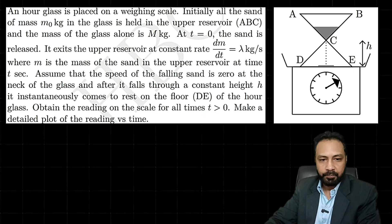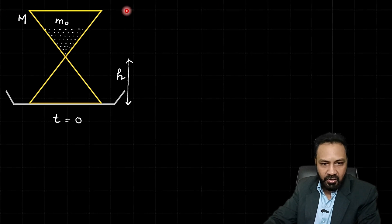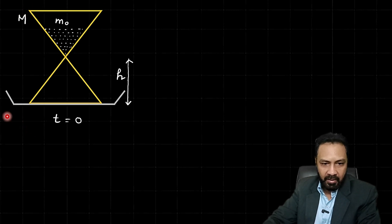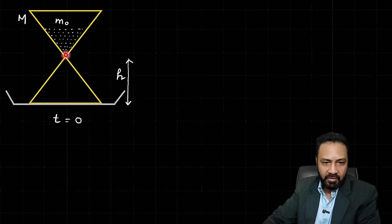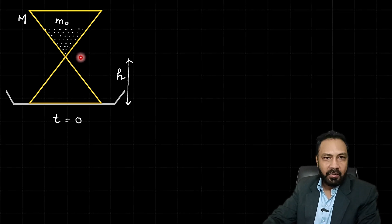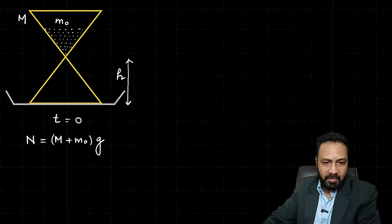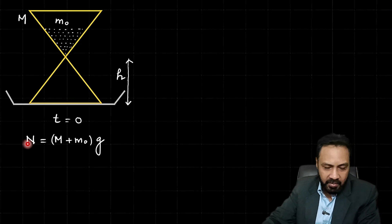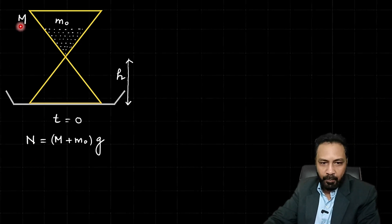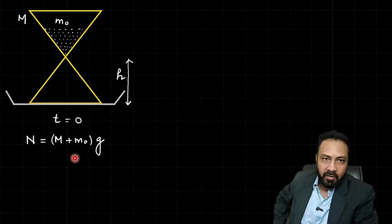Let's go ahead and solve this beautiful problem. This is the initial situation: the hourglass has mass M (without sand), and the total mass of sand is m₀. At t = 0, sand starts leaking from the neck with initial velocity zero at a constant rate λ kg per second. So at the initial moment, the reading of the scale is the normal reaction, which equals (M + m₀)g.